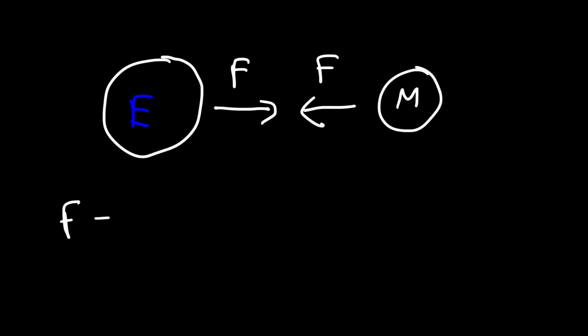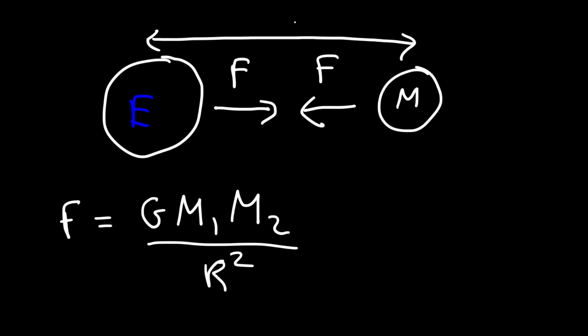And to calculate this force, it's equal to the gravitational constant times the mass of the earth times the mass of the moon divided by the distance between their centers, which is r. So r is the distance between the center of the earth and the center of the moon. And so using that equation, you can calculate the gravitational force between the earth and the moon. This equation is known as the universal law of gravitation.